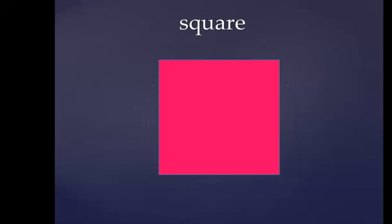Let's go to the other shape. This is a square. Say square. Very good! Do you remember the song of the square? Let's sing it all together. One, two, three: my four sides are all the same, all the same, all the same, my four sides are all the same, I'm a square! Very good!